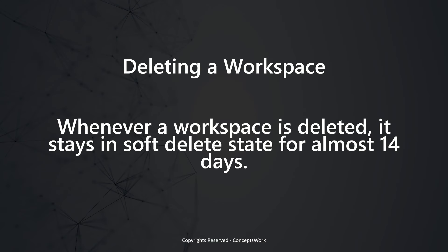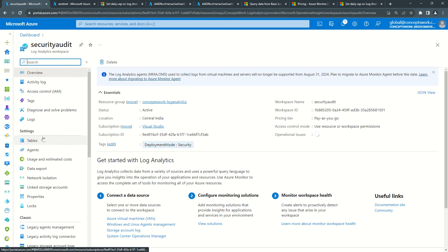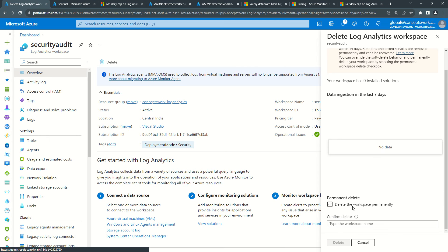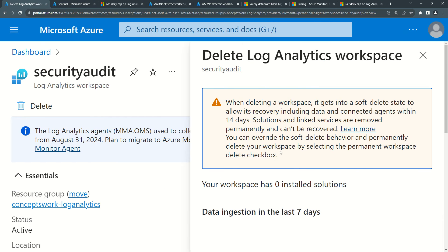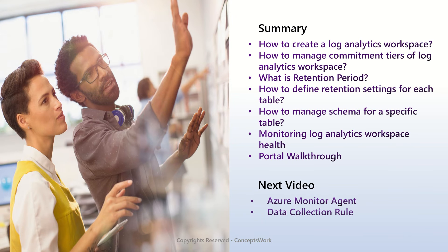The last thing to cover is deletion of a workspace. Whenever a workspace is deleted, it stays in a soft delete state for almost 14 days. If you choose the same name again and you have already ingested some data, that workspace will be restored for you. There is also the option to delete the workspace permanently — selecting that removes the soft delete behavior. Every workspace you delete will be in soft delete state for 14 days before being permanently removed. Quick summary: we've discussed commitment tiers, cost, retention settings, schema, monitoring, and a complete portal walkthrough for workspace settings.